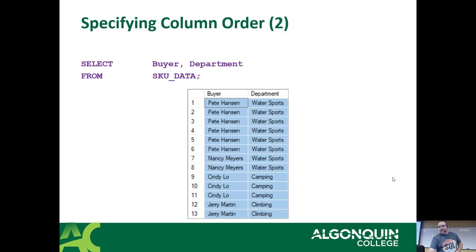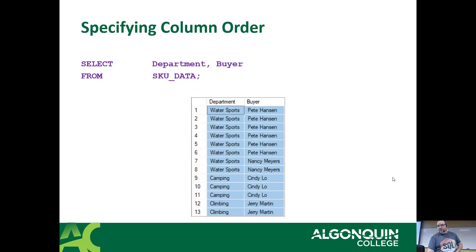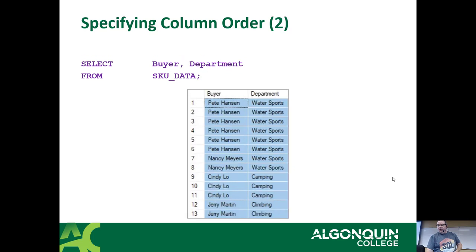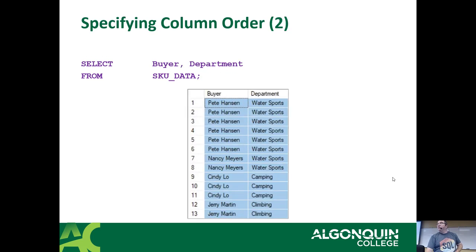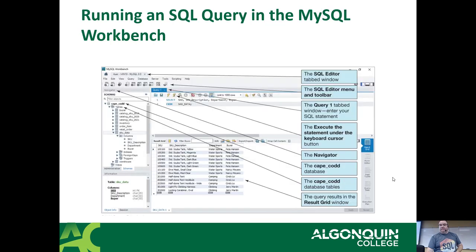Here's the example: department, buyer versus buyer, department. If you switch between the two, you can see the columns switch around depending on what column order you picked.